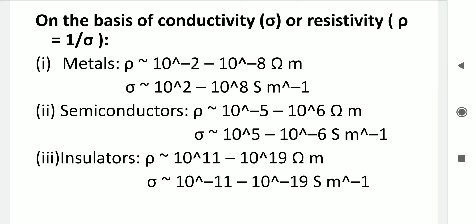On the basis of conductivity or resistivity: metals are materials having very low resistivity. They require very little input to generate a very large current response, so the current generated is very high at low input and cannot be easily controlled. The range of resistivity for metals is 10⁻² to 10⁻⁸ ohm·meter, and the corresponding conductivity is 10² to 10⁸ siemens per meter.